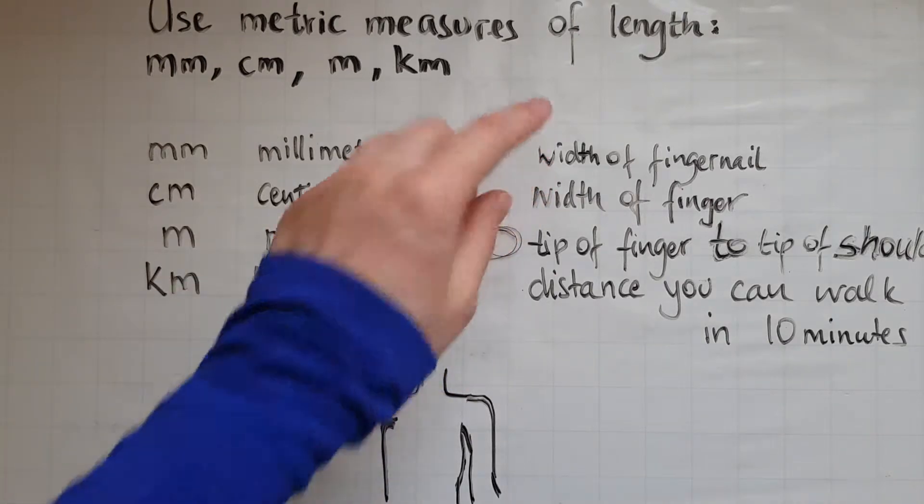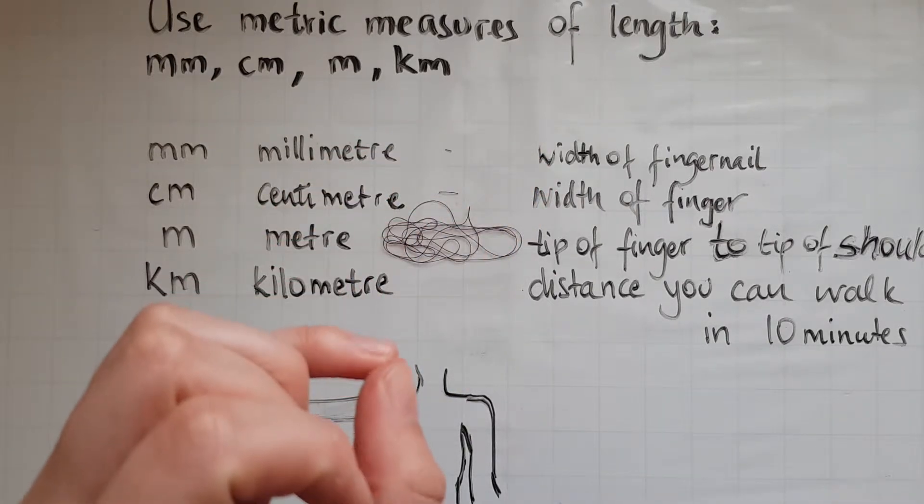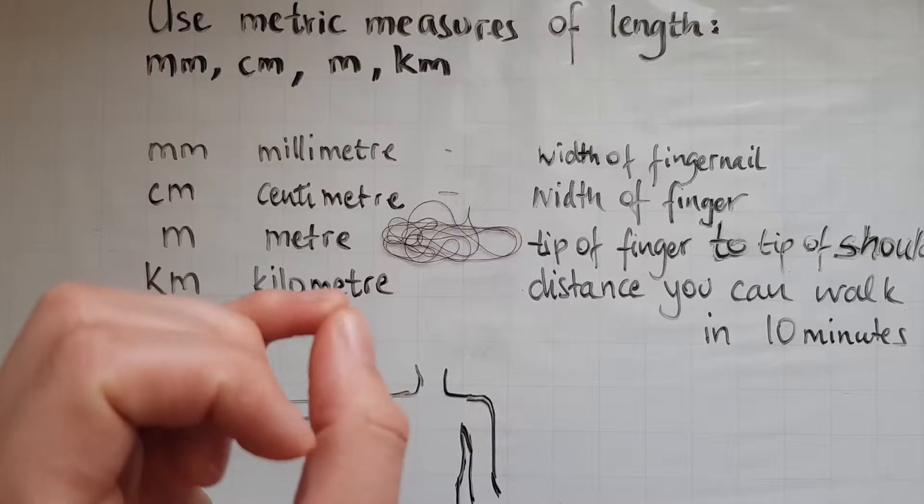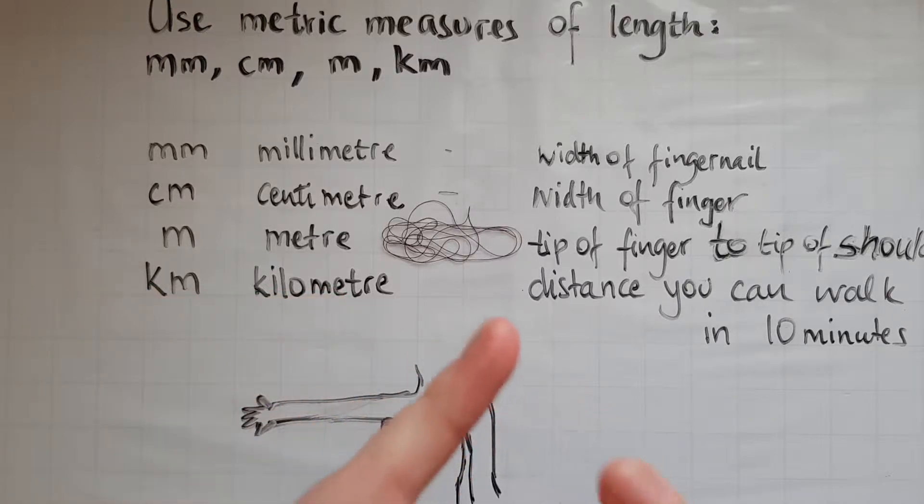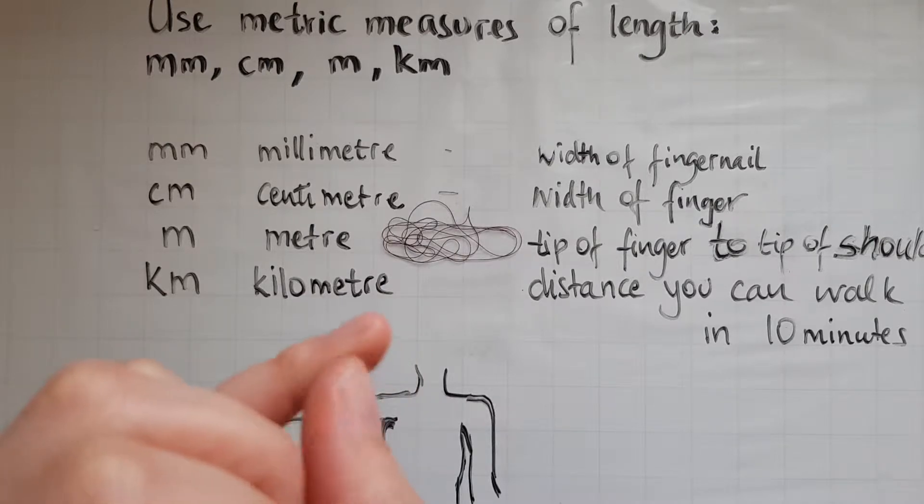Something to help you remember is that a millimeter is about the width of a fingernail. So if you turn your finger this way you can see the nail and the width of it is about a millimeter, so very small.